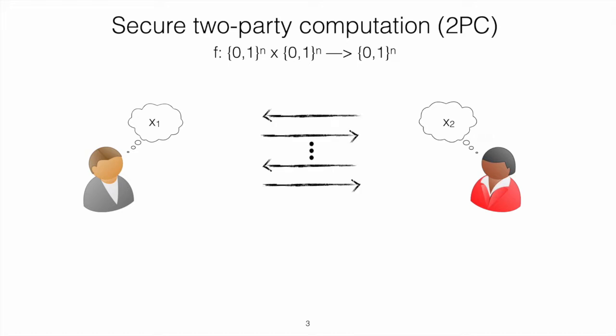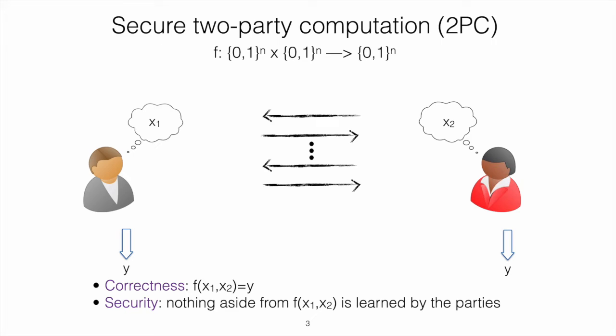But it's not realistic to assume the existence of such a trusted party, since this central node might fail or might collude with either Alice or Bob. So what we want to do is design a protocol described by a set of messages that Alice and Bob exchange over a communication channel, such that at the end of this communication, Alice and Bob get the correct output of the computation. Moreover, in the case where one of the two parties is corrupted, the corrupted party should not learn more than what can be inferred from the output of the function itself.